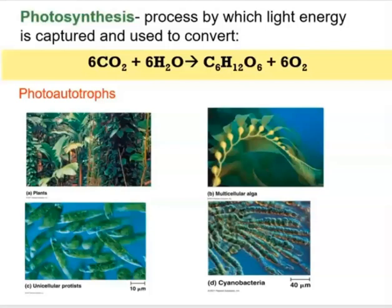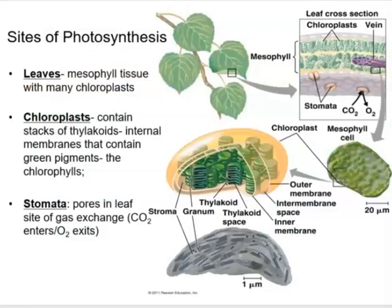Organisms that carry out photosynthesis are called photo autotrophs. Examples would be plants, multicellular algae, unicellular protists, and even cyanobacteria — also called blue-green algae because of their color, but they are truly bacteria, so they are prokaryotic. They can photosynthesize, meaning they can produce their own food and release oxygen as a result.